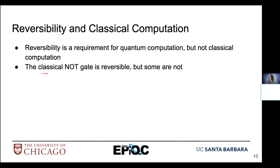The classical NOT gate is basically equivalent to our NOT gate that we use in quantum computing, and the classical NOT gate is reversible. But other operations are not reversible.